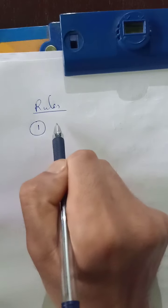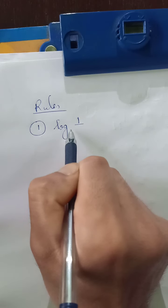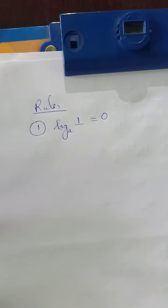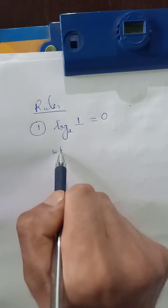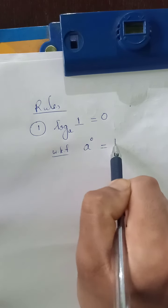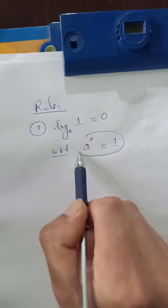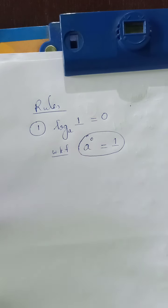Now let us see some basic rules in logarithms. Rule number 1: log of 1 with any base is equal to 0. Why? Because we know that A to the power 0 gives you 1 — any term to the power 0 always gives you 1. So using this condition, log of 1 with any base is 0.